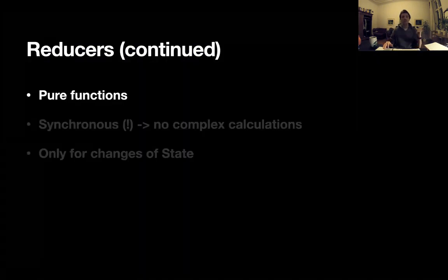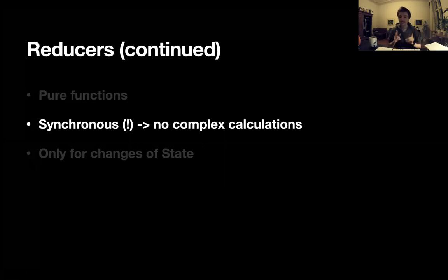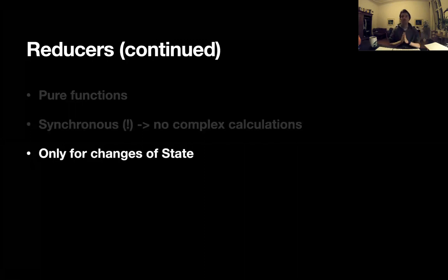Reducers are pure functions — this is very important. They're synchronous, so you should not have any complex calculations there, because they will block the whole app and the state will not be updated. There should only be state-related changes — no asynchronous stuff. Just pure business logic, and it's better to be fast.